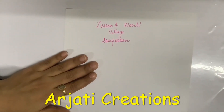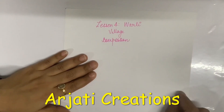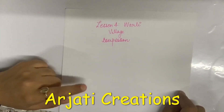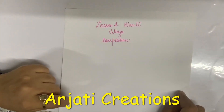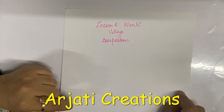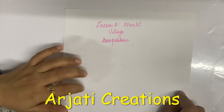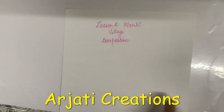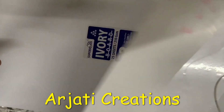So a very warm welcome. Today we are going to start with Lesson 4 where we are going to learn Warli village composition. We have already covered the first three lessons where we've learned the basics of Warli, the Warli borders. We have also learned Warli people, birds and animals, trees and huts as well as a tarpa dance scene. Now today we are going to learn a village composition.